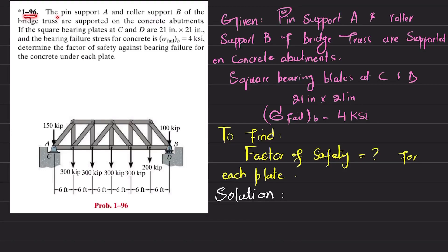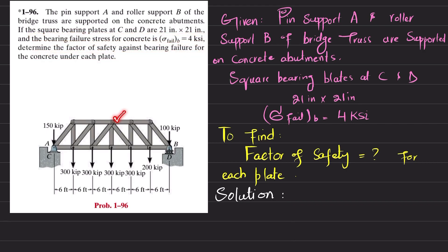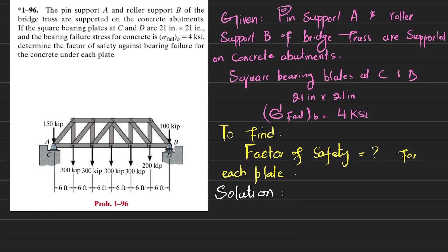Welcome back. Problem 1-96. The statement is: the pin support at A and roller support at B of the bridge truss are supported on concrete abutments. Square bearing plates at C and D are 21 by 21 inches, and the bearing failure stress for concrete is 4 ksi. Determine the factor of safety against bearing failure for concrete under each plate.